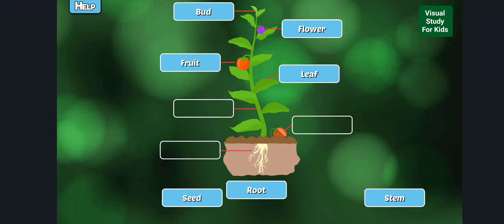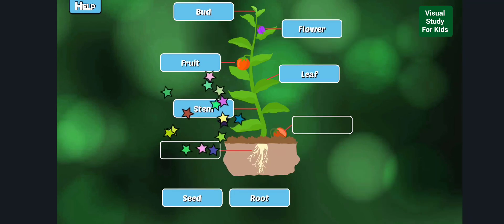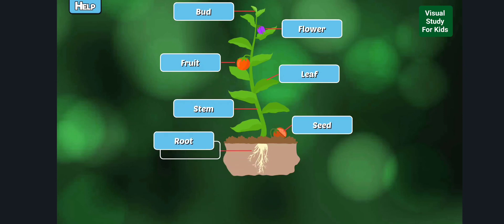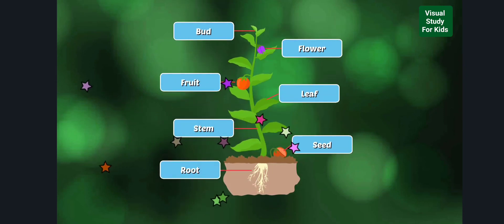Seed. Root. Stem: The stem supports leaves, flowers, and fruits and conducts water and nutrients. Root. Seeds contain new baby plants. Roots hold the plant steady and absorb water and nutrients.